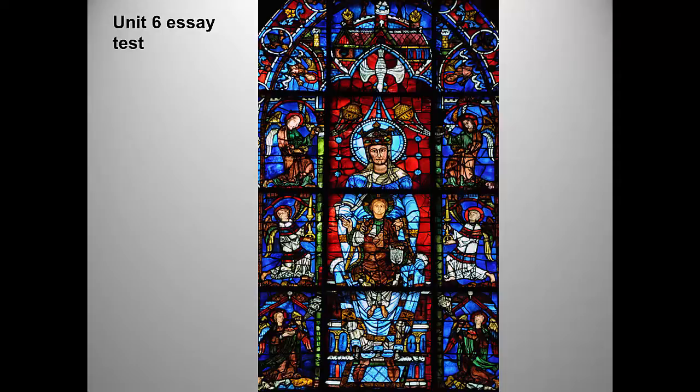You should also know the date, which is a little trickier. The central lancet with Mary and Jesus dates to around 1170 CE, which makes it early Gothic — really on the cusp of Gothic and Romanesque. The depiction of Mary as the Throne of Wisdom is a common theme in Romanesque art.